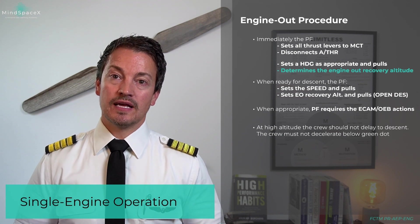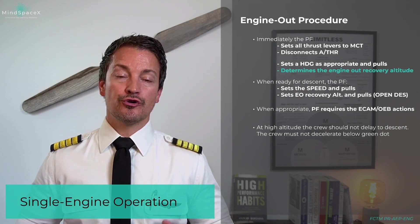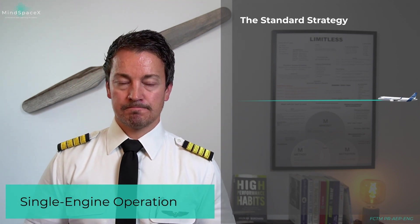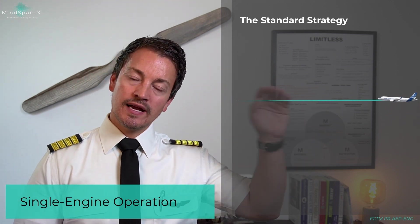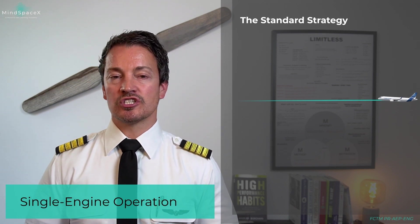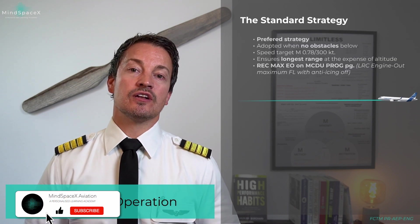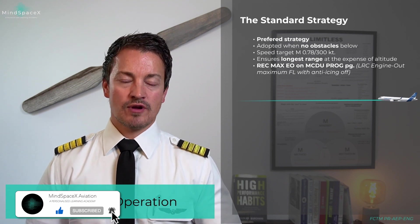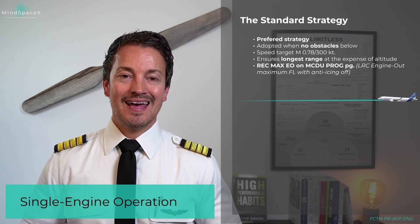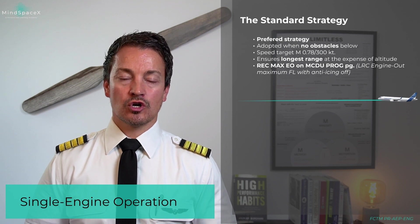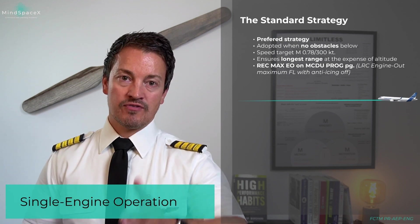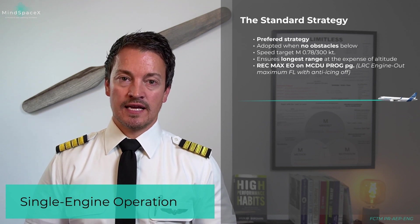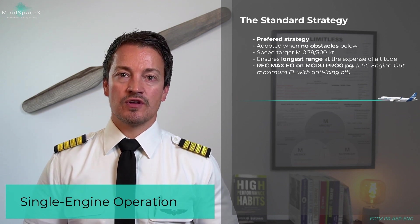Let's look at how to determine the engine-out recovery altitude for the different strategies, starting with the standard strategy. We are cruising along in a high cruise scenario and we have an engine failure. This is the preferred strategy that crews should adopt at any time if there are no obstacles below on our flight plan ahead. The speed target for this descent is Mach 0.78, 300 knots.